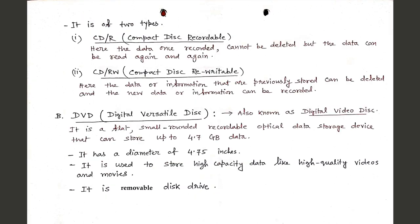CDs are of two types. Number one: CD-R (Compact Disk Recordable) — here the data once recorded cannot be deleted, but the data can be read again and again. Number two: CD-RW (Compact Disk Rewritable) — here the data or information previously stored can be deleted and new data or information can be recorded.